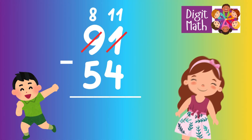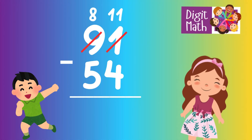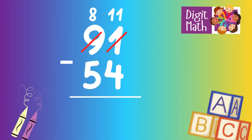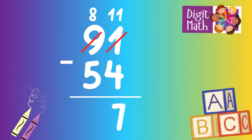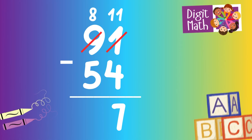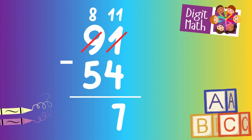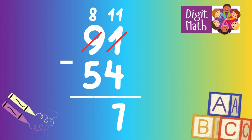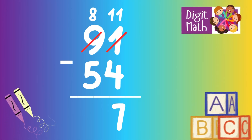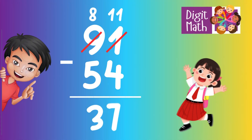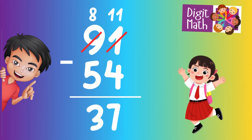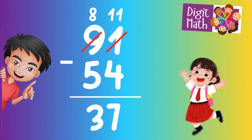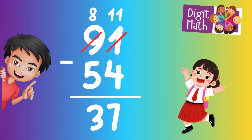Now we have 11 in the Units column. Subtract 4 from 11, which equals 7. In the Tens column, we now have 8. Subtract 5 from 8, which equals 3. So the final result is 91 minus 54 equals 37.